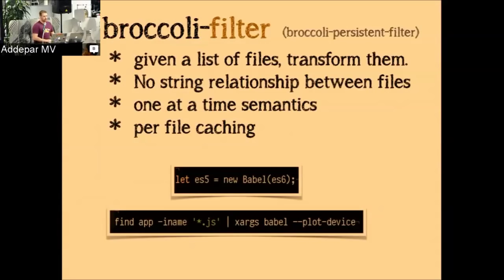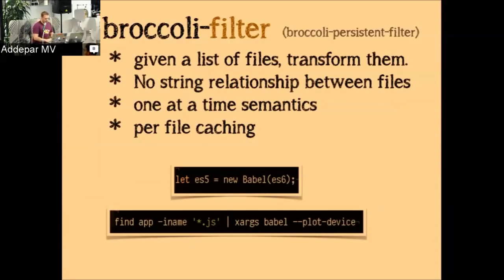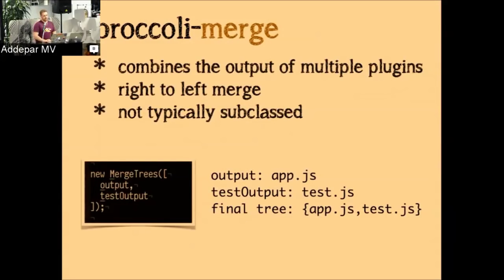Broccoli Filter, given the input of maybe a Funnel, transforms every file it encounters. It's a one-to-one style transformation — given app.js it produces a new app.js with only its content modified. It doesn't care about relationships between files, so it's not the right tool for source map concatenation. It also has per-file caching: if you have many JavaScript files and change app.js, Babel should only rebuild app.js. This keeps build performance quick.